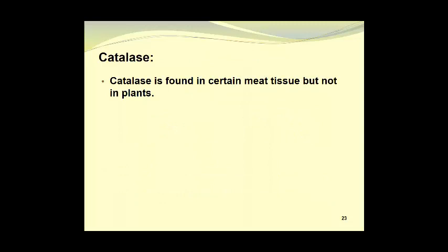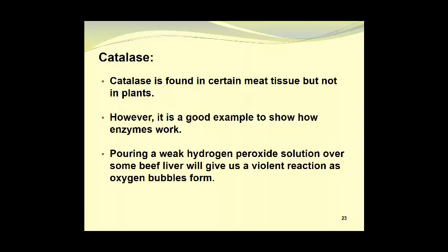Catalase is found in certain meat tissue but not in plants. However, it is a good example to show how enzymes work. Pouring a weak hydrogen peroxide solution over some beef liver will give us a violent reaction as the oxygen bubbles form.